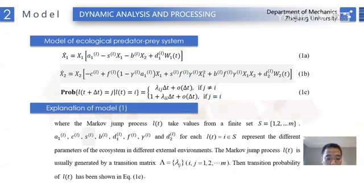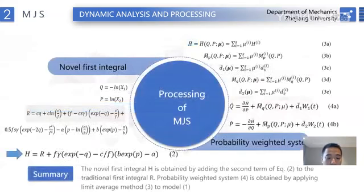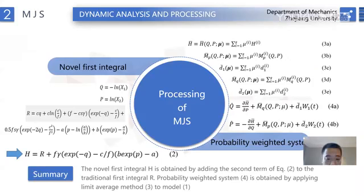The Markov jump process L(t) is usually generated by a transition matrix lambda. The transition probability of L(t) has been shown in equation 1c. For the model of equation 1, we first construct a non-standard integral. The non-standard integral H is obtained by adding the second term of equation 2 to the traditional standard integral R. Then, we need to deal with the Markov jump system. We can deal with system 1 by the limit average method, which is the process represented by equation 3. In this way, we obtain the probability-weighted system represented by equation 4.